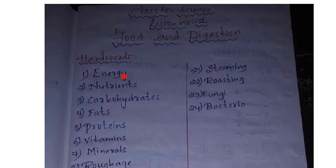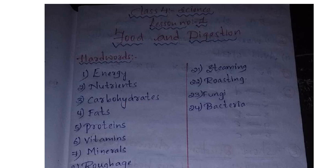First, the hard words. First one is 'energy' — E-N-E-R-G-Y. Next is 'nutrients' — N-U-T-R-I-E-N-T-S. Third one is 'carbohydrates' — C-A-R-B-O-H-Y-D-R-A-T-E-S. If the spelling is big, split it — cut it into small parts and read.